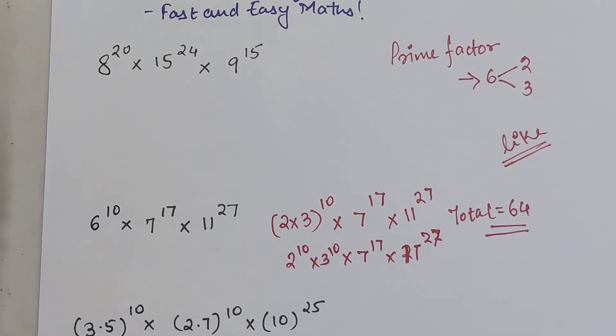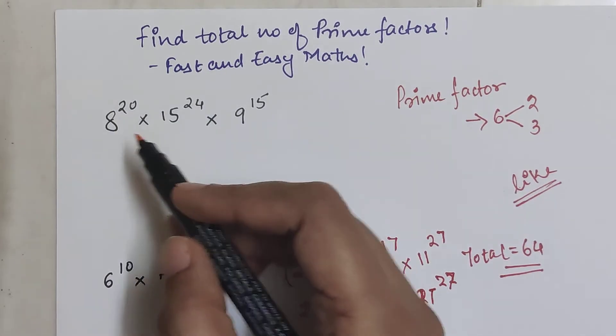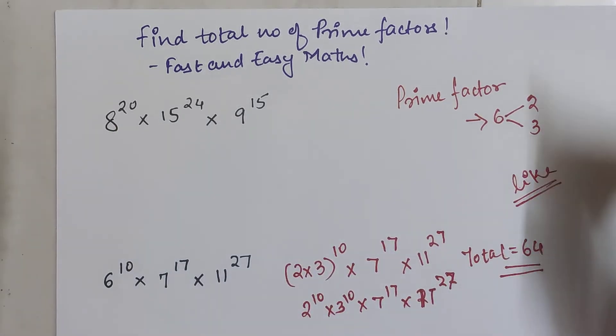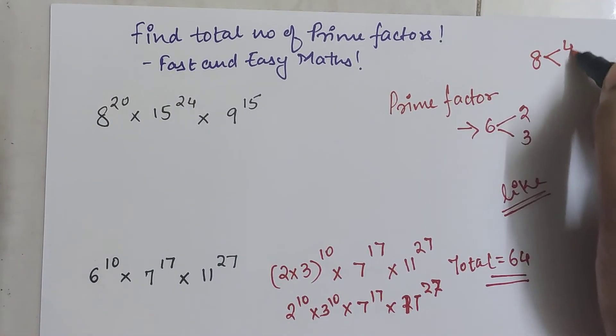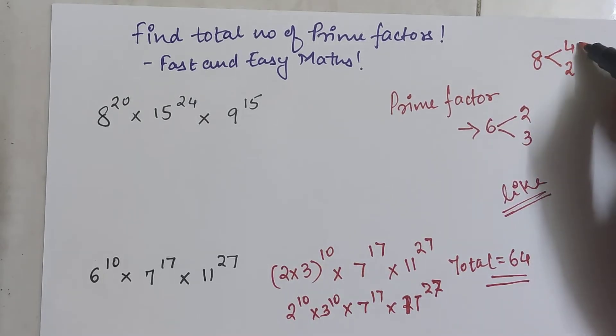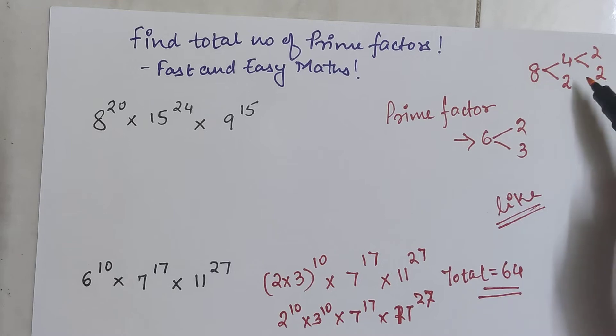So now coming to the first question. So here what we have is 8. So what happens is 8 can be written as 4 into 2, and this 4 can be written as 2 into 2. So basically can I say 8 is nothing but 2 into 2 into 2.